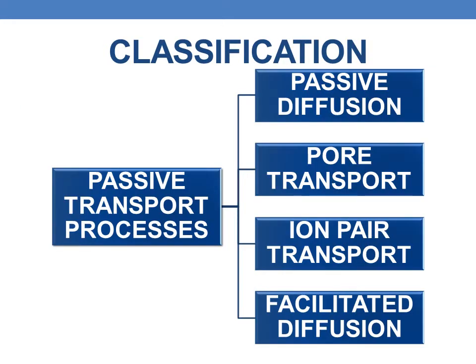Passive transport processes are majorly classified into four types: passive diffusion, pore transport, ion pair transport, and facilitated diffusion. In this session we will discuss the definition and examples of all four processes.